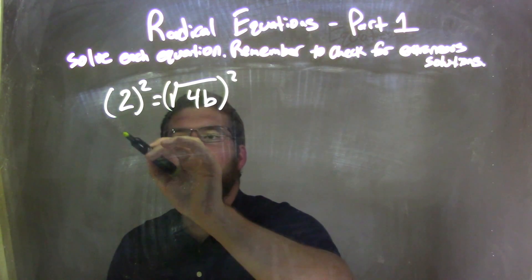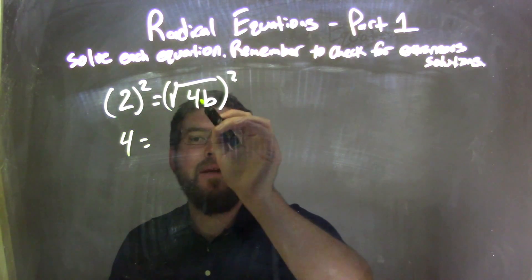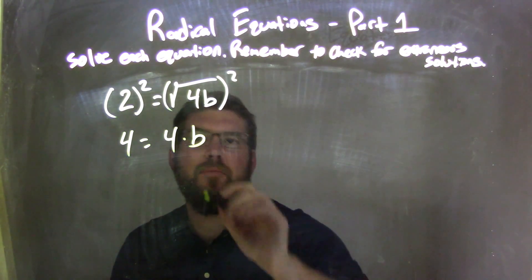In doing so, 2 squared is 4, and it eliminates the square root of 4 times b, leaving 4b, 4 times b.